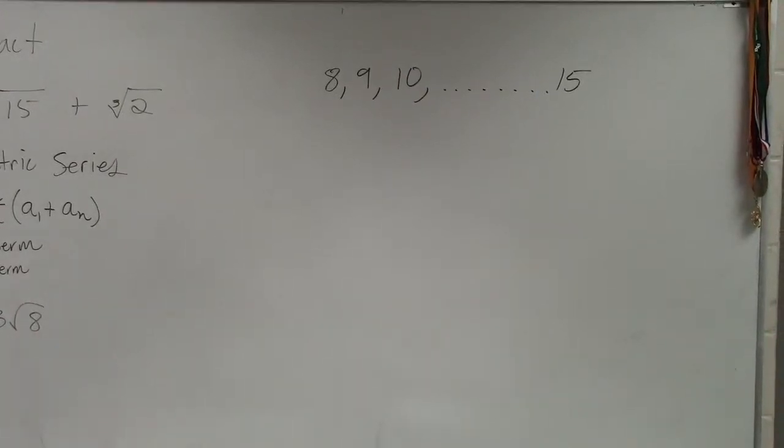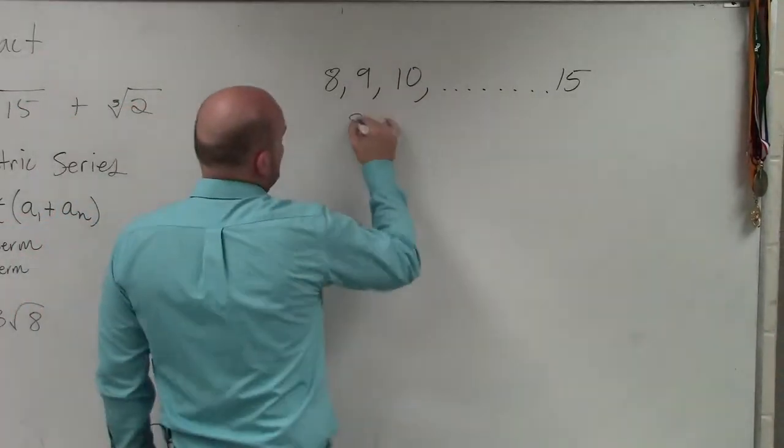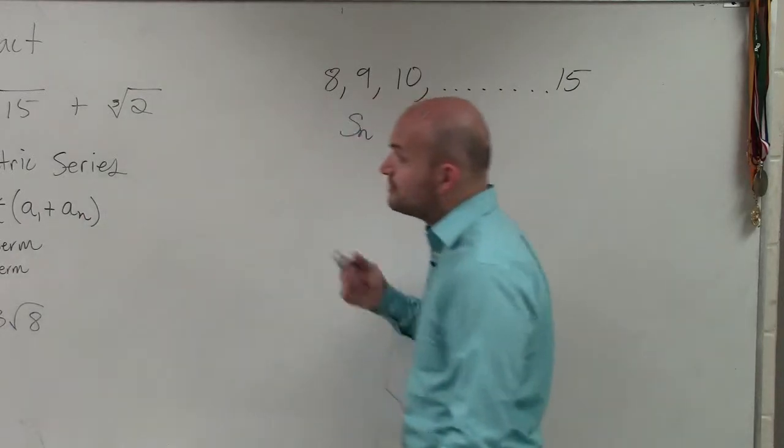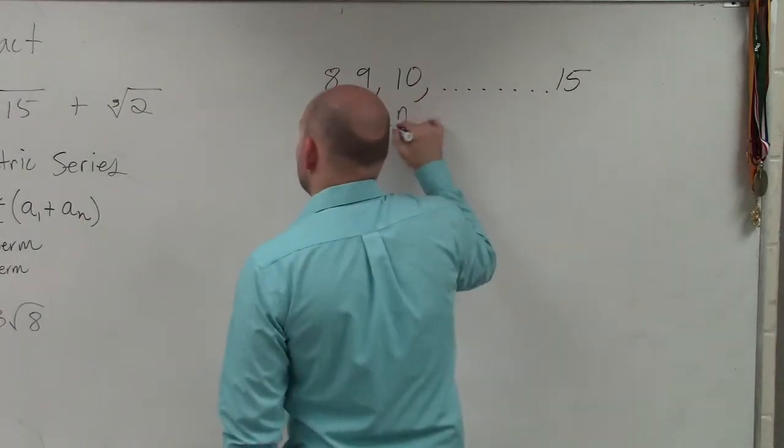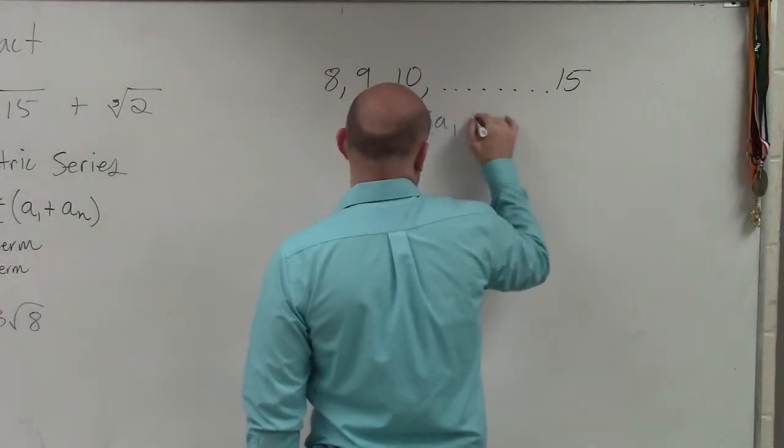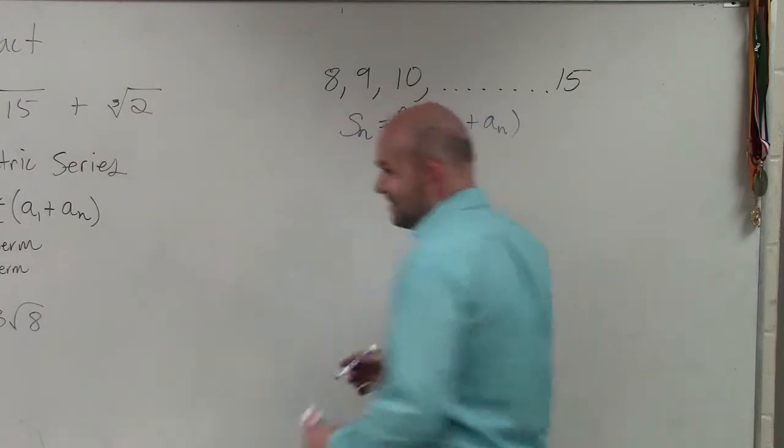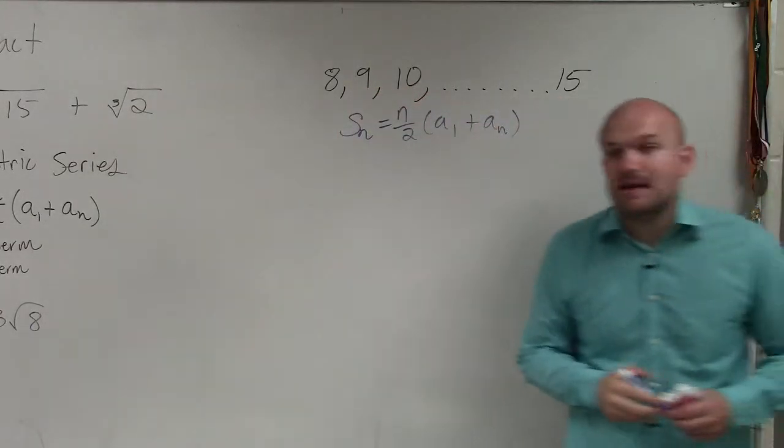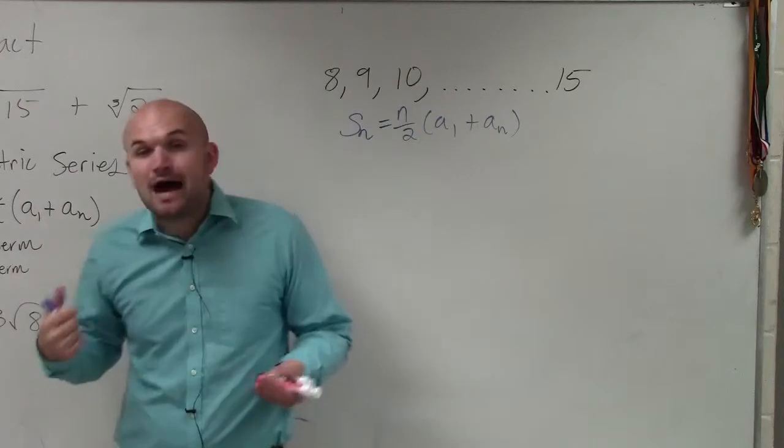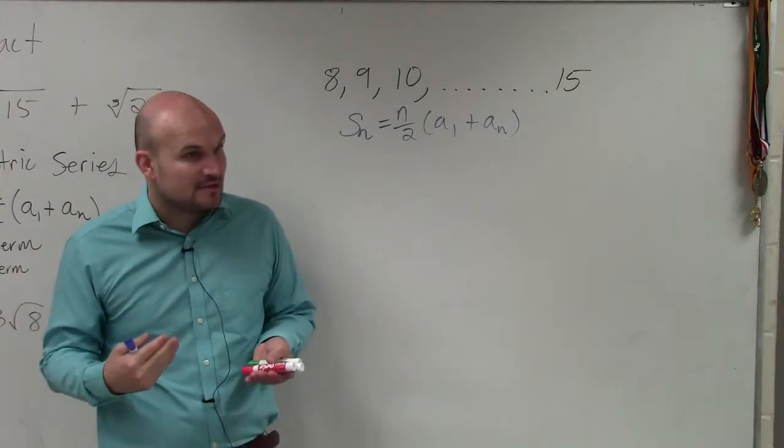OK. So in this example, ladies and gentlemen, we're trying to find n. So if you guys remember the sum formula, s of n equals n divided by 2 times a sub 1 plus a sub n. Now, the main important thing though, guys, is we need to figure out how many terms we have.